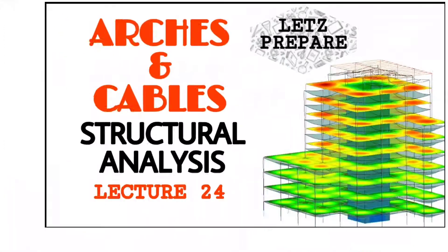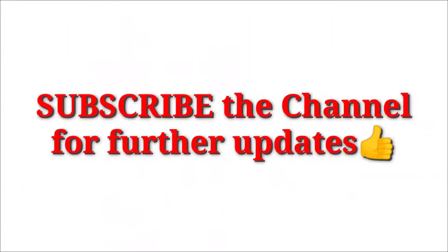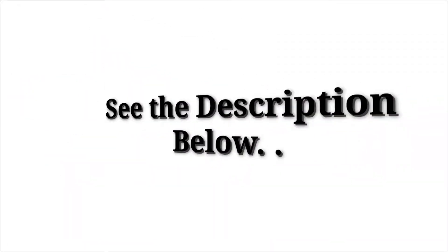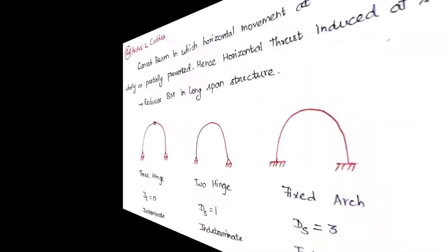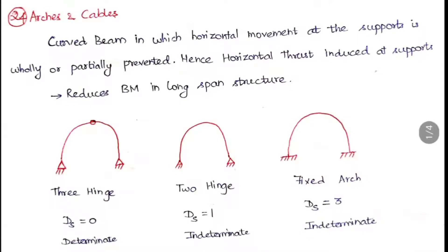Today we are going to see about arches and cables. First, arches — an arch is nothing but a curved beam. It is a beam in a curved shape in which horizontal movement at the supports is wholly or partially prevented, hence a horizontal thrust is induced at the supports.